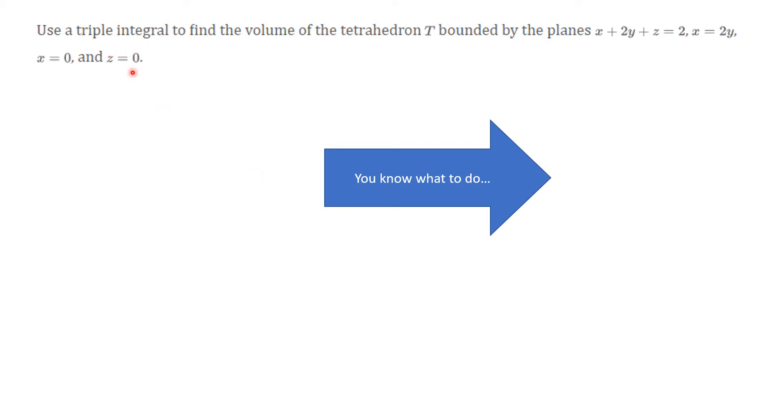So here's a problem for you to ponder. Use a triple integral to find the volume of a tetrahedron T. And the tetrahedron is defined by, or it's bounded, let's do it that way, is bounded by the planes x plus 2y plus z equal 2, x equal 2y, x equal 0, and z equal 0. You know what to do.